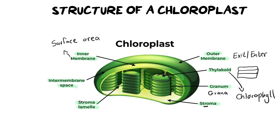If you are ever asked why chloroplasts are structured the way they are, remember it's all about surface area. They are flattened, they are disc-shaped, they have double membranes — and it all comes back to providing enough surface area so that many reactions can take place at once.